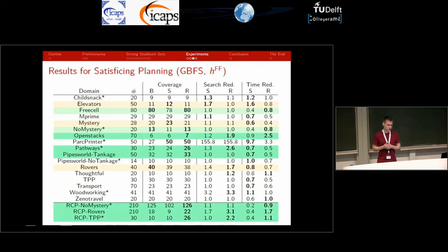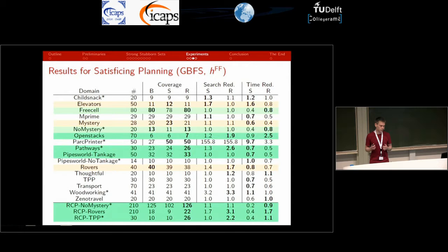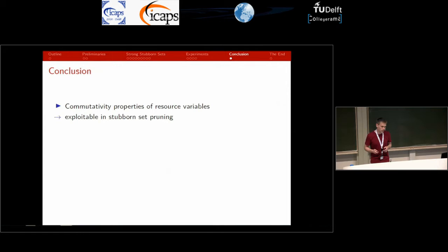In satisfying planning, things change a bit but not too much. There are actually a few cases where coverage decreased — for example, in LOADPOS the resource version lost the search reduction that the standard strong stubborn set had offered. Overall, the resource stubborn set configuration still performs slightly better than the standard strong stubborn set. As in optimal planning, search reduction improved significantly in OpenStacks and Pathways. In resource-constrained benchmarks, the resource stubborn set makes good use of the resource variables, and coverage was increased across all those domains.